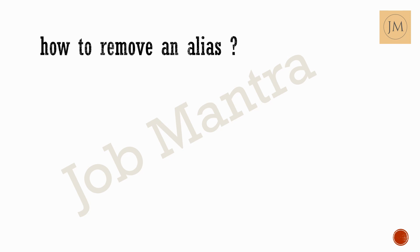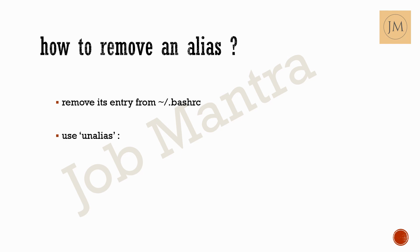Now, how to remove an alias. There are two methods. Either you can use the manual process of removing that particular entry from the .bashrc file — just go to the file and remove that alias entry. Or you can use the 'unalias' command followed by the alias name. For example, since we previously created the 'install' alias, we can remove it with: unalias install. Or if you want to remove all aliases from the system, you can use: unalias -a.